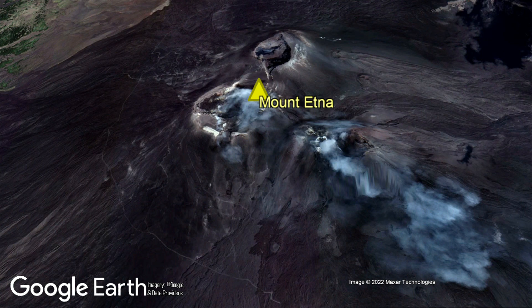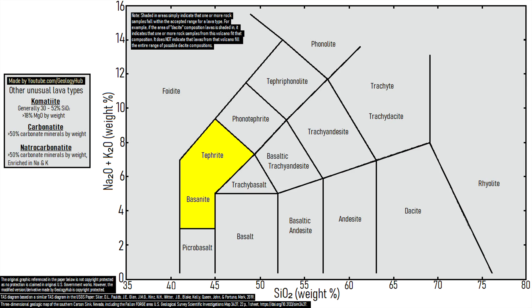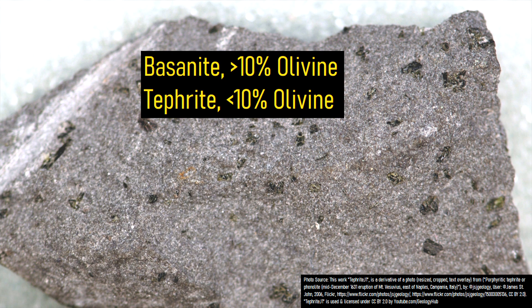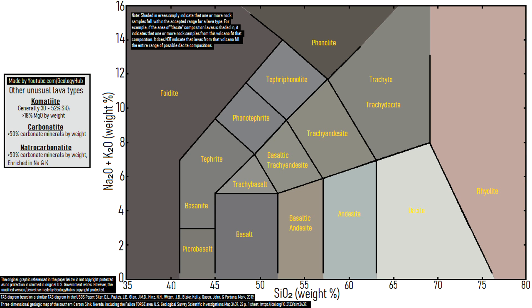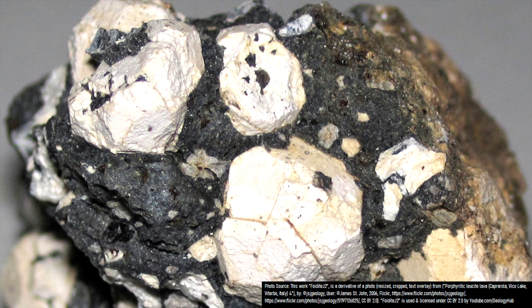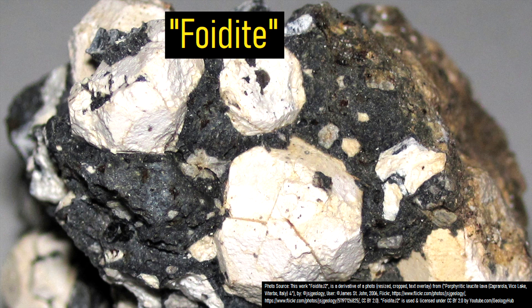Trachybasalt is common at volcanoes with moderately explosive eruptions such as Mount Etna. Tephrite and basanite fill the same place in the diagram, but have one difference: basanite has greater than 10% olivine, while tephrite has less than 10% olivine by weight. While basanite has a darker color that is lighter than its basalt cousin, tephrite has more gray than black coloration.